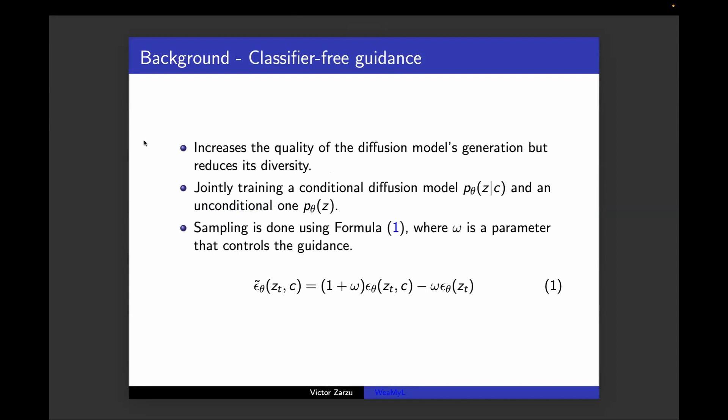There's also an idea of training such models called classifier-free guidance, which aims to reduce the diversity of the generation results but increase their quality. This is done by jointly training two diffusion models, a conditional one and a non-conditional one. The sampling is done using the formula seen here, where omega is a parameter that controls the guidance, which is a number from zero to one. This is an alternative to initial approaches which were using a classifier to guide generation, but this is more computationally efficient since there is just one model used.